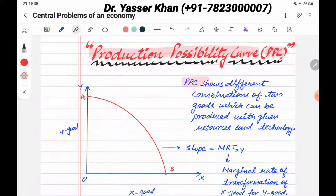What is the production possibility curve? The production possibility curve shows different combinations of two goods which can be produced with given resources and technology. So the production possibility curve, what is the curve?